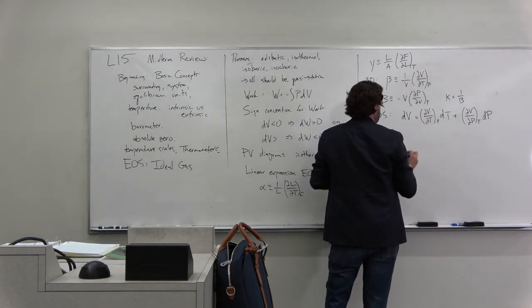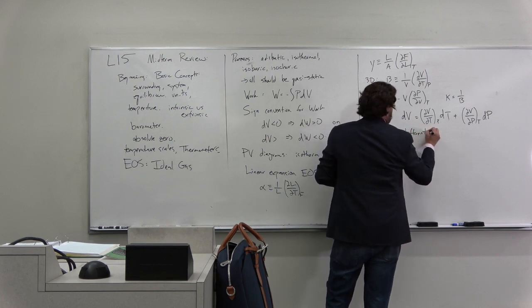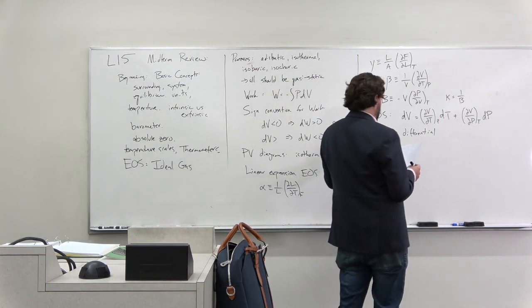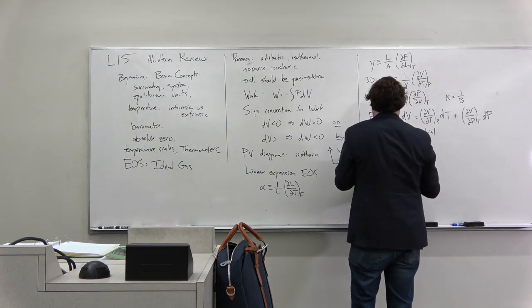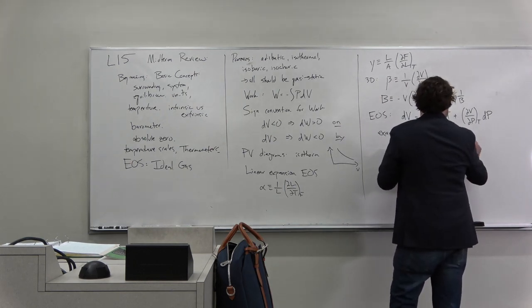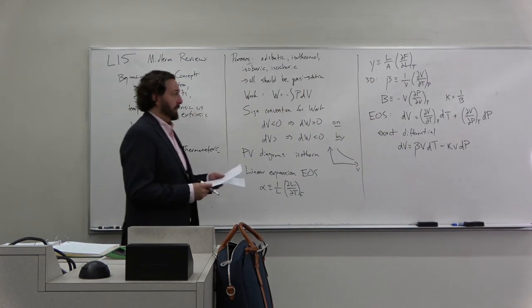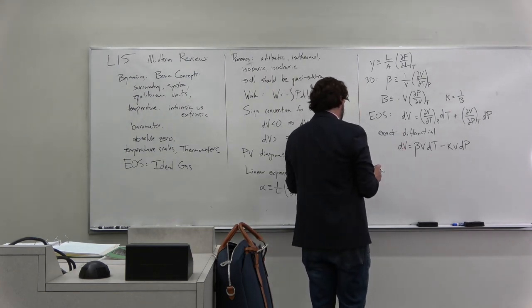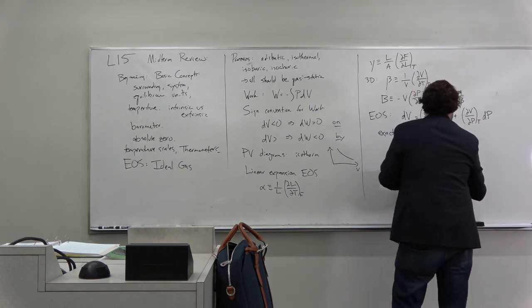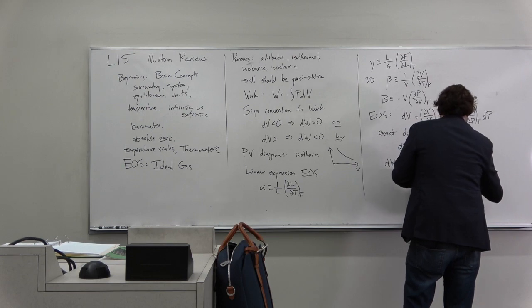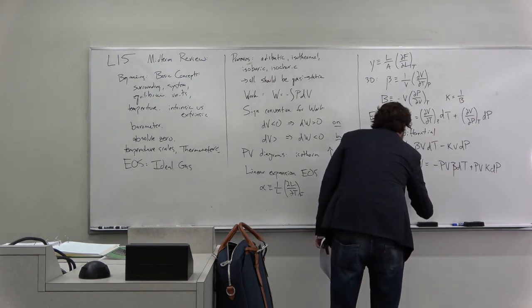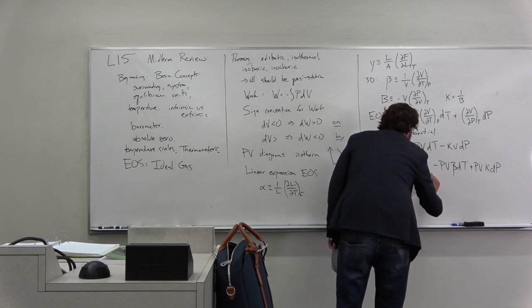The point is we could write that down because the volume was an exact differential. Whereas work was an inexact differential - we needed to know the path. So we couldn't write this for work. We could get minus beta v dt minus kappa v dp. Remember, we couldn't write the equivalent for work because it was an inexact differential. But we could write dw is minus p dv, so minus p v beta dt plus p v kappa dp. But you need the path to get the work.